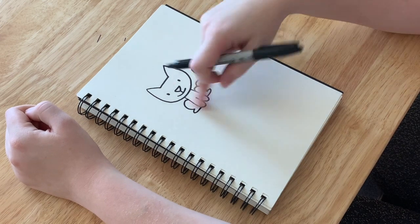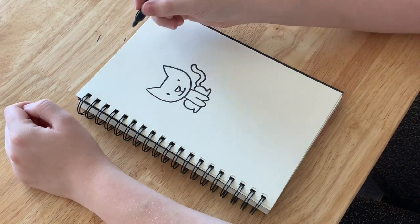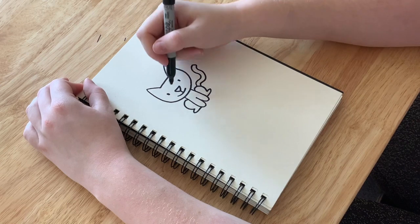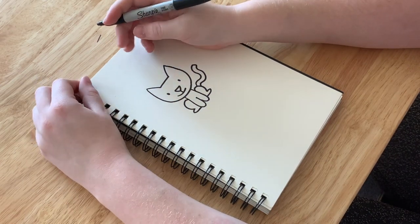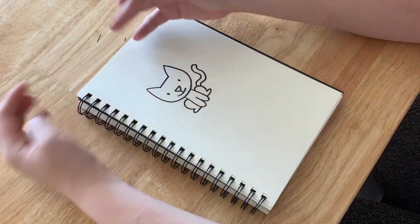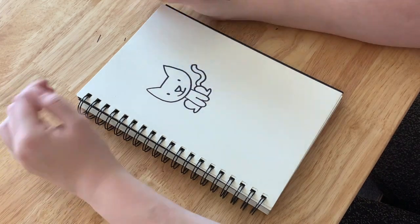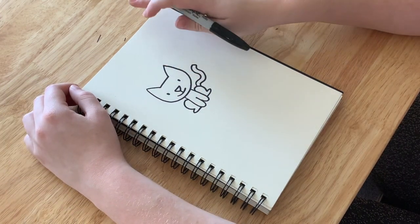Now this is where you get to get creative. So whatever markings you want your cat to have, if you want it to have stripes like a tiger, if you want to have dots, if you just want it to be a white cat, you can just leave it like this and be white or black or brown or whatever color you want.